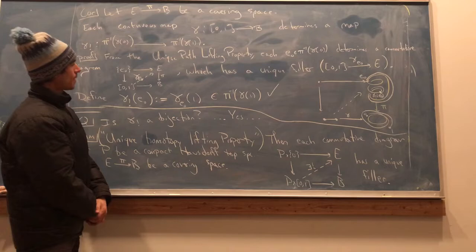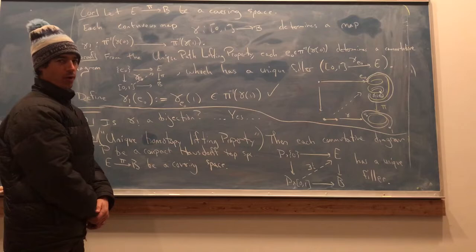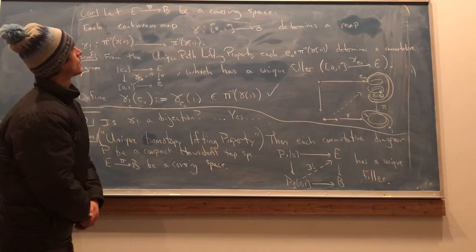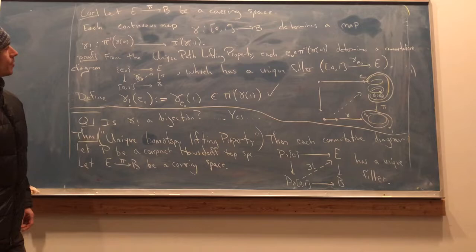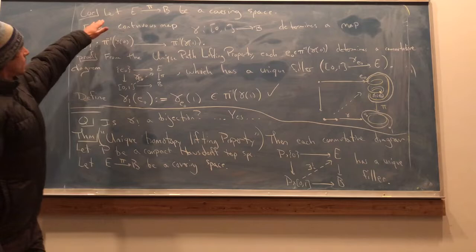So the unique path-lifting property at least establishes that map. It'll take a little more work to see that that map is in fact a bijection. So here it is more precisely. I say it's a corollary of the previous result, the unique path-lifting property.